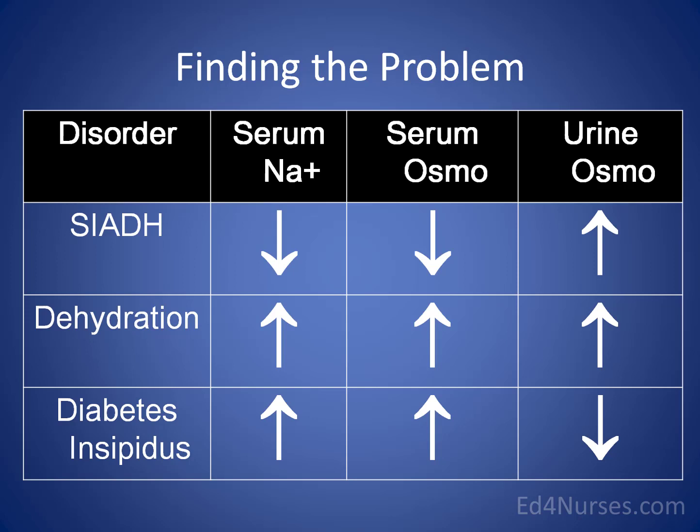A chart can help clarify these problems. First, remember ADH comes from the posterior pituitary, so look for neurologic dysfunction. Also, whenever you hear the term osmolality — serum osmolality or urine osmolality — simply substitute the word concentration instead. So serum osmolality becomes serum concentration, and urine osmolality becomes urine concentration. That makes things much clearer.